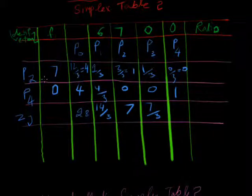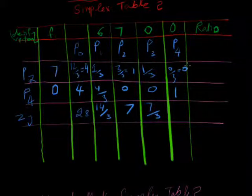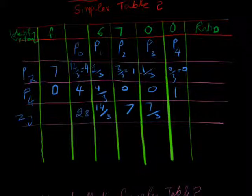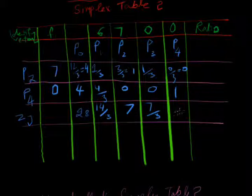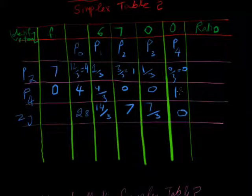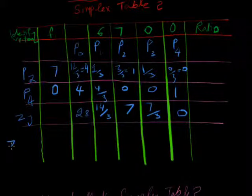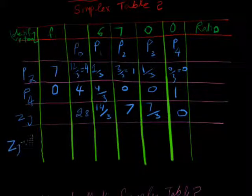Now in last, 7 multiply with this 0 is 0. 0 multiply with 1 is 0, 0 plus 0 is 0. Now we calculate ZJ minus F1.